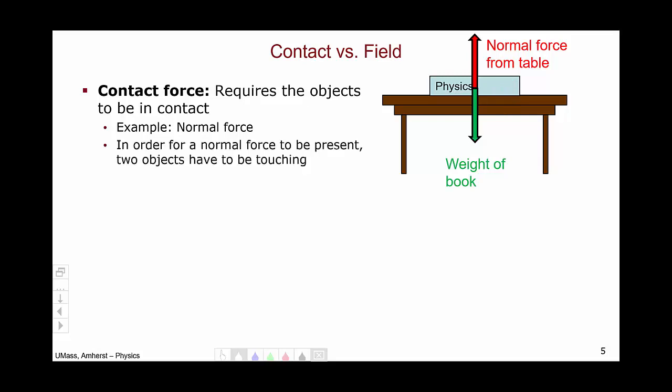In order for a normal force to be present, the two objects have to be in contact. What I mean is if I were to lift the physics book off the table, then there would be no more contact and the normal force from the table on the physics book would now be zero.